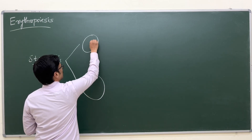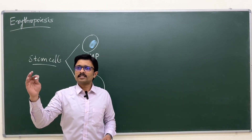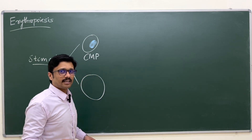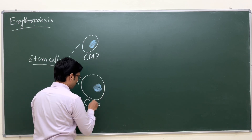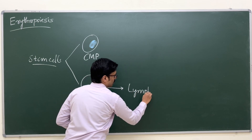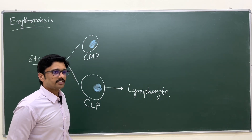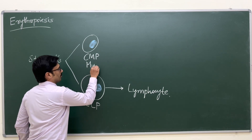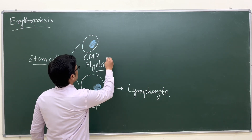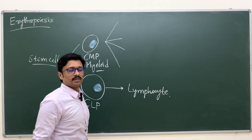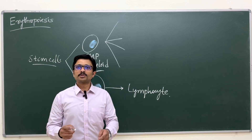The myeloid progenitor is called the common myeloid progenitor (CMP). From the CMP, all blood cells are synthesized except lymphocytes, which are synthesized from the common lymphoid progenitor. The rest of the blood cells are differentiated and synthesized from the common myeloid progenitor, which differentiates into numerous colonies.